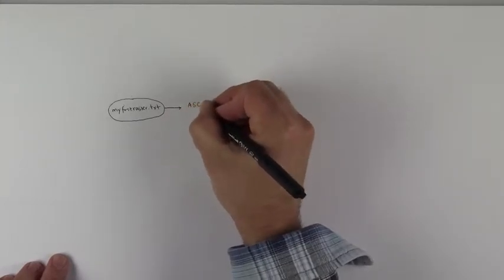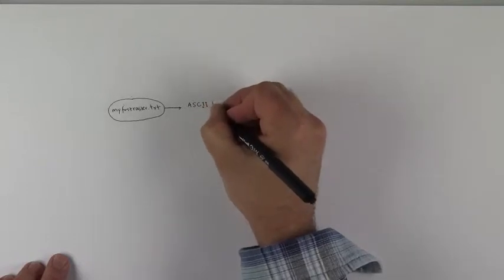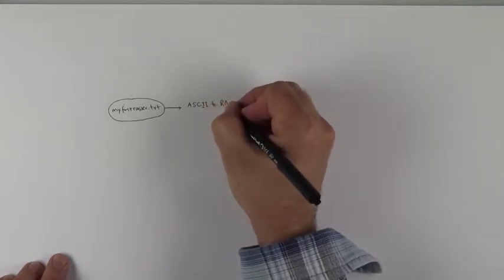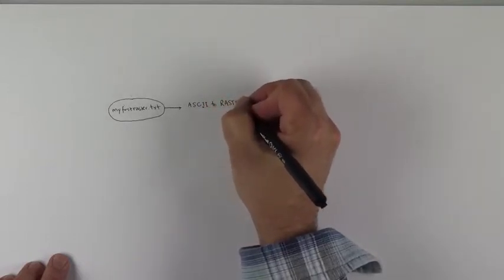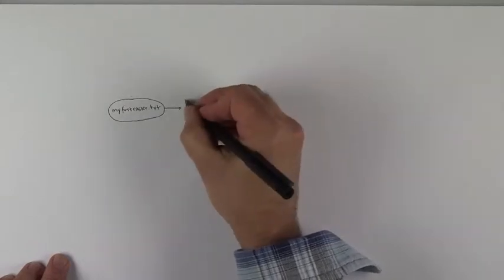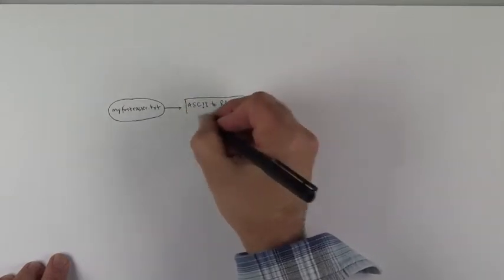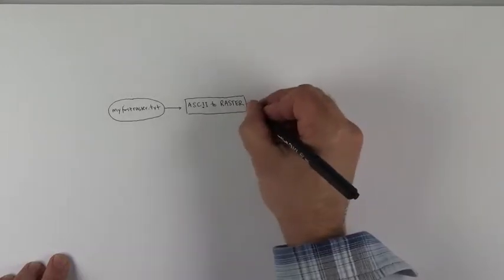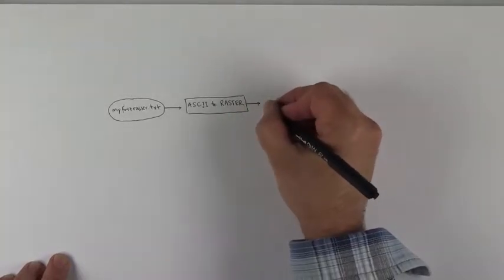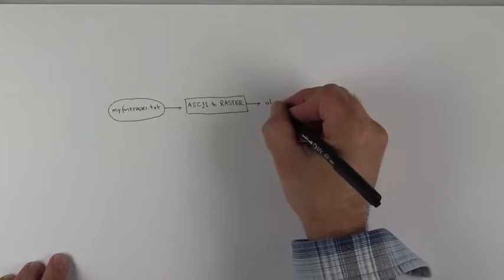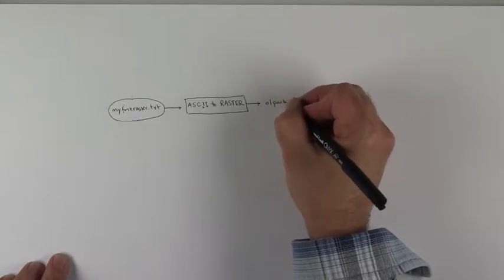You used a tool called I think ASCII to raster, and I'm going to put a box around that. And then that kicked out a new thing I think you probably called it Othello one or something, I'm just going to call it like parking.